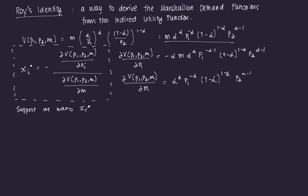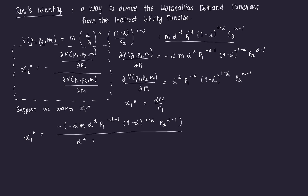What we can do is plug both of these into the formula to compute X1 star. If you recall, X1 star we already know should equal alpha M over P1 — so we want to prove that. Following the formula, X1 star equals negative of negative alpha M times alpha raised to alpha, P1 raised to negative alpha minus 1, times 1 minus alpha raised to 1 minus alpha, times P2 raised to alpha minus 1, all over alpha raised to alpha, P1 raised to negative alpha, times 1 minus alpha raised to 1 minus alpha, times P2 raised to alpha minus 1.